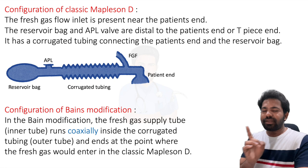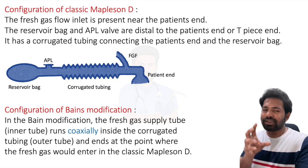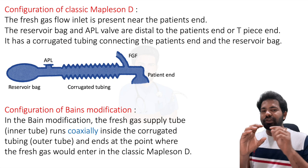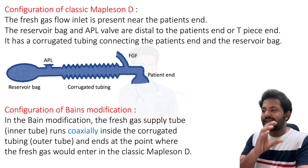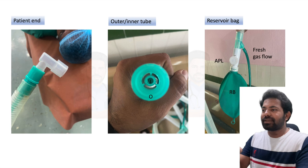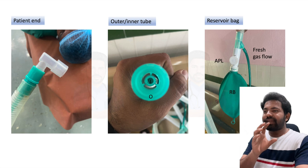In Bain's modification of the Mapleson D, the fresh gas supply tube — the inner tube — runs coaxially inside the corrugated tubing: a tube-within-a-tube model. The outer tube is corrugated and transparent, and the inner tube runs through it, delivering fresh gas to the patient's end. You can see the TPS at the patient's end, and the outer tube containing the coaxial inner tube.